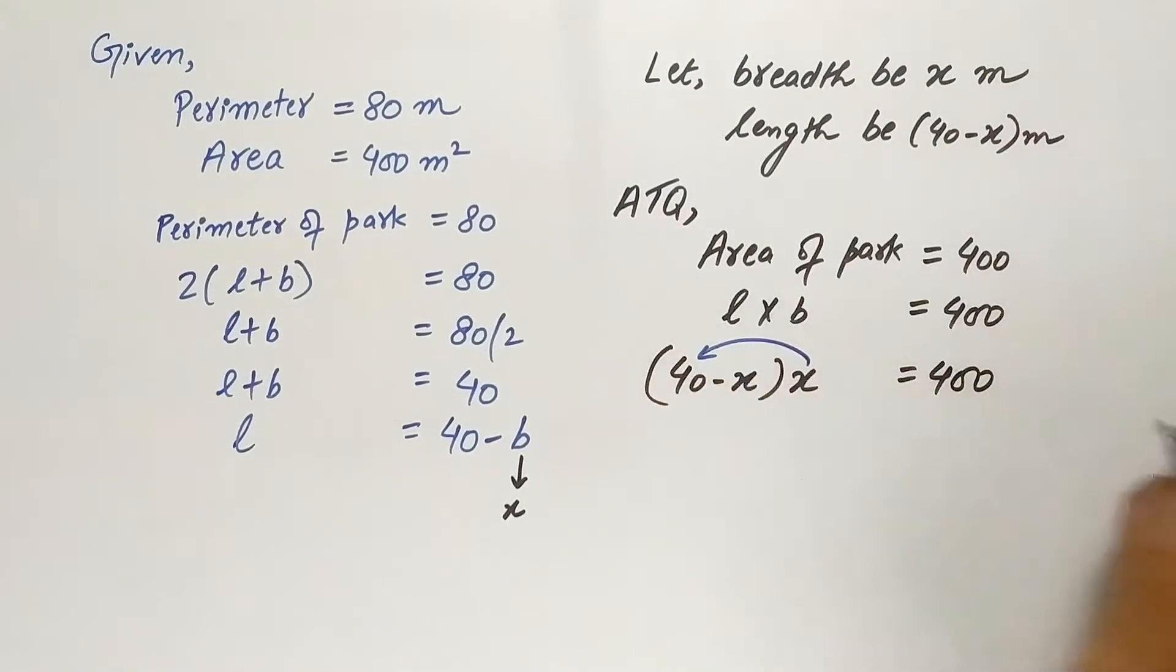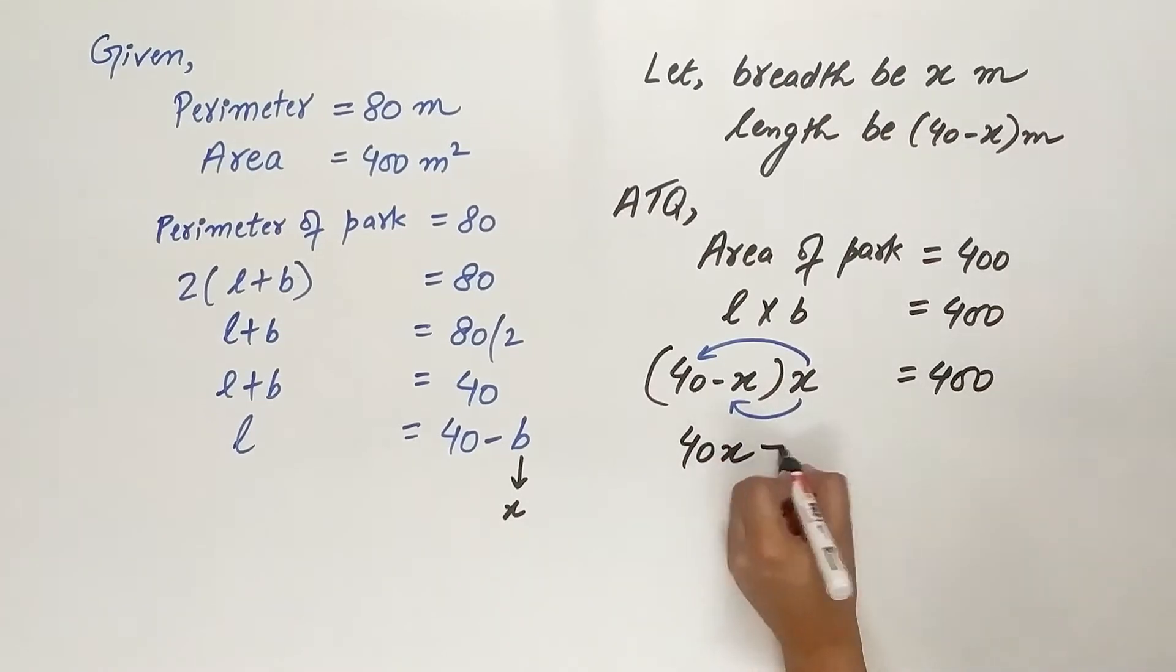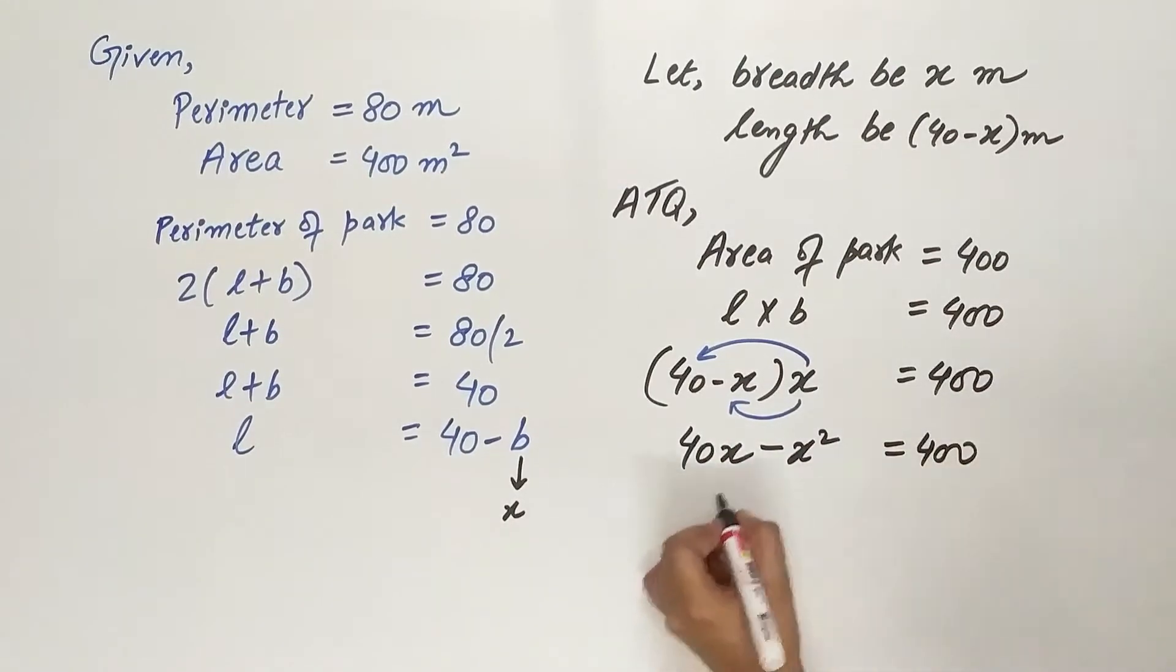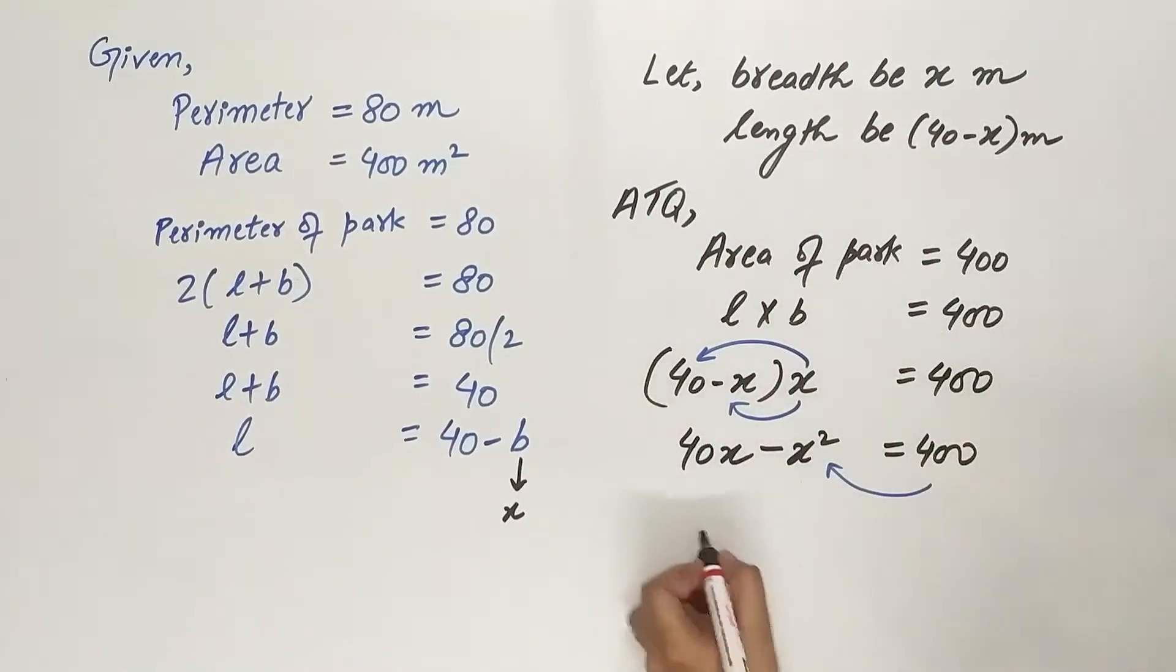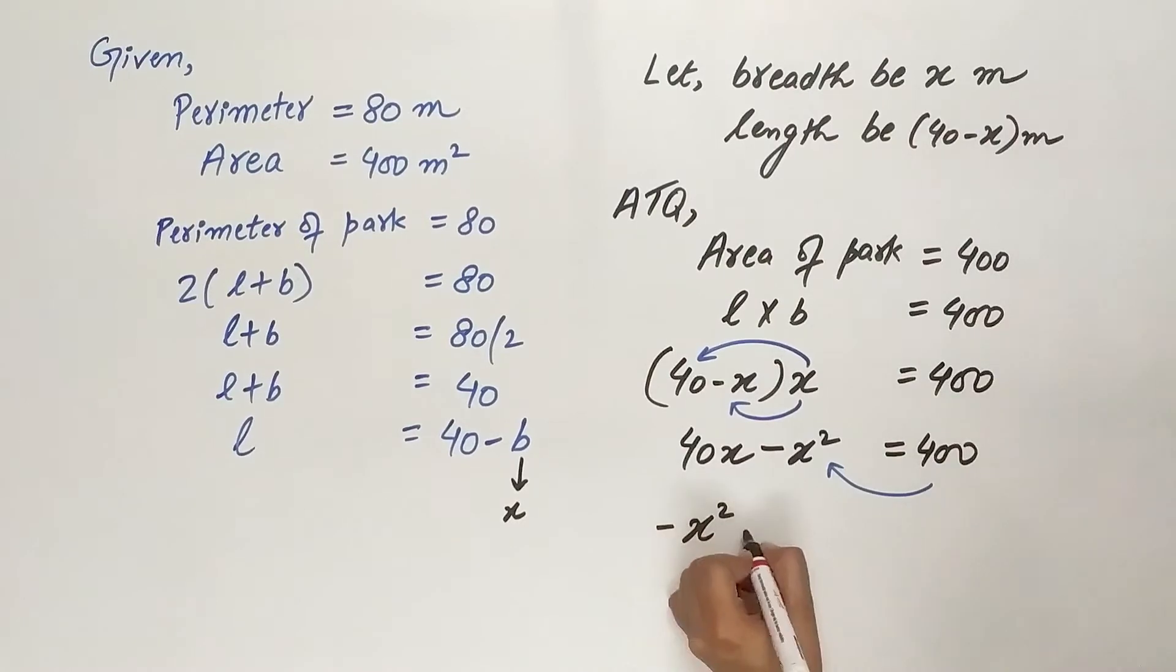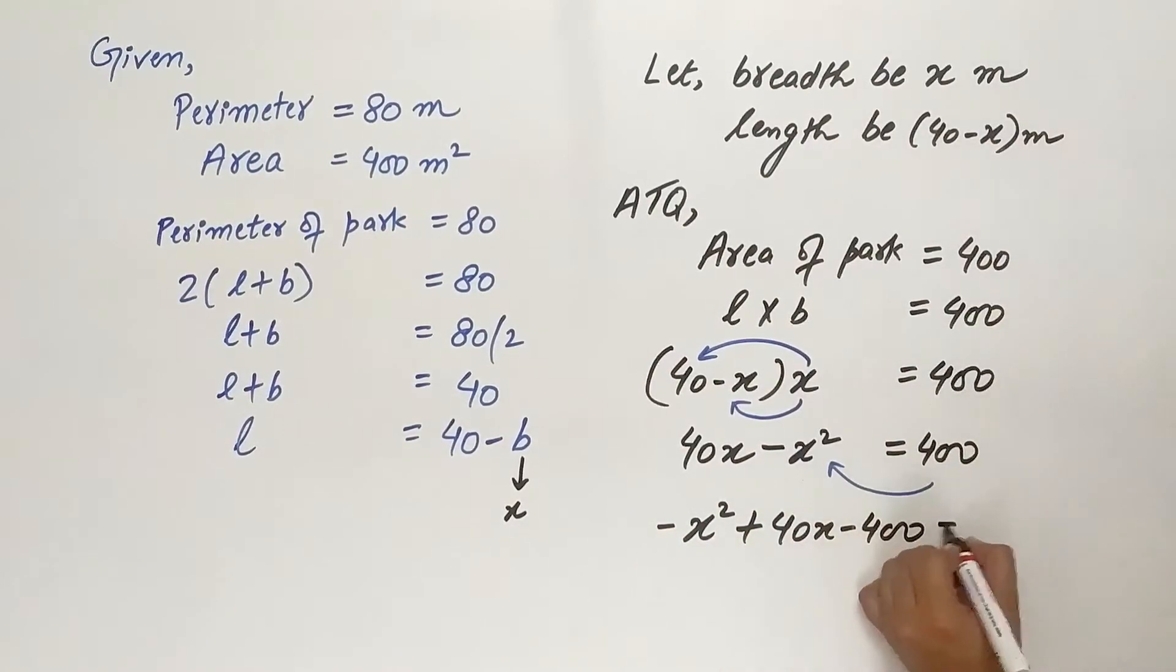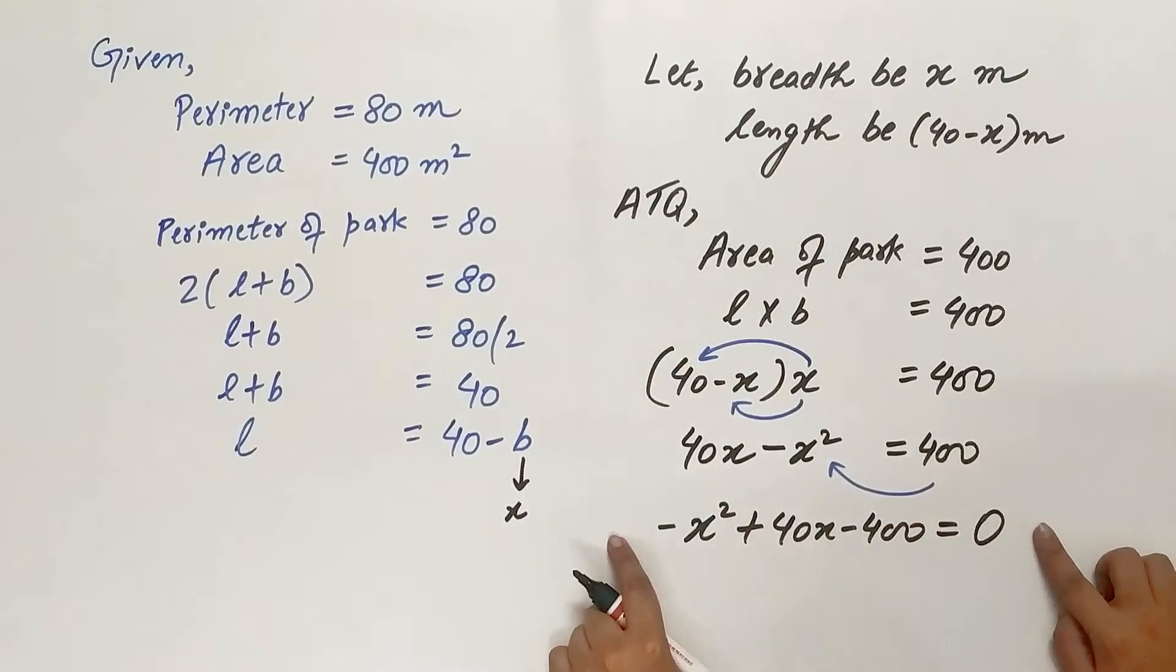x multiplied by 40 is 40x. x multiplied by negative x is negative x square equals 400. Transpose 400 to left side. Negative x square plus 40x minus 400 equals 0. So this is our quadratic equation.